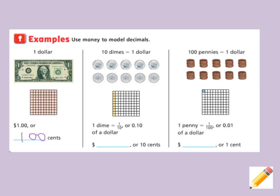Because if we skip count by tens — ten, twenty, thirty, forty, fifty, sixty, seventy, eighty, ninety, one hundred — it took ten skips to get to one hundred counting by tens. And we just talked about how one hundred pennies is equivalent to one dollar.